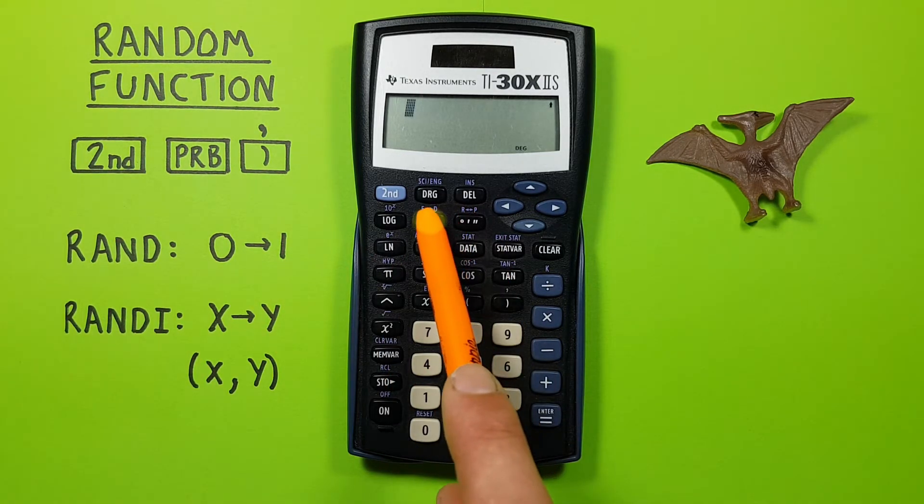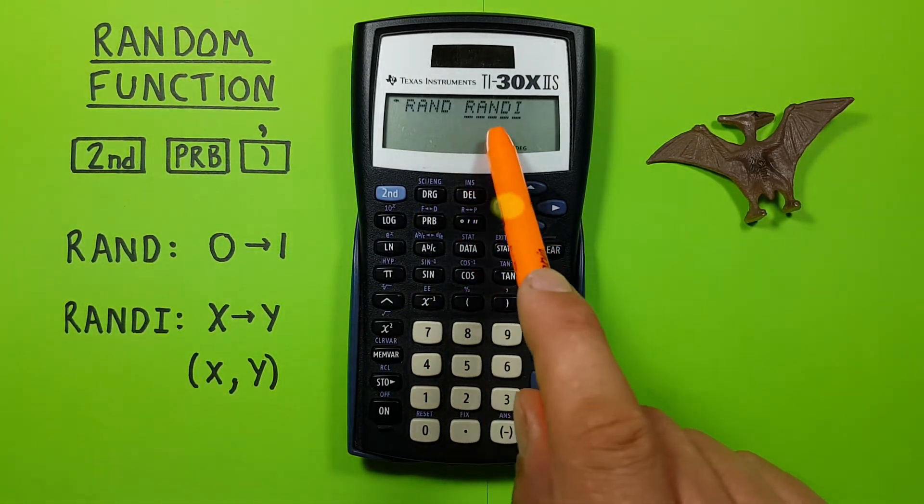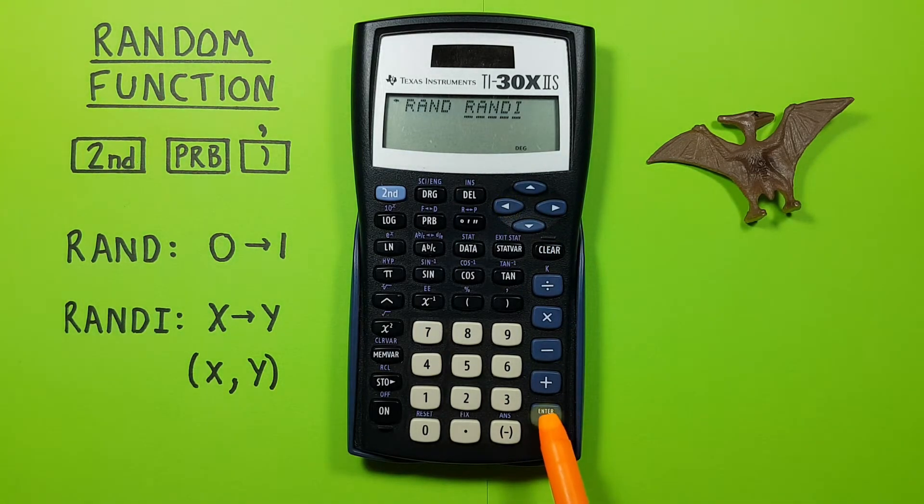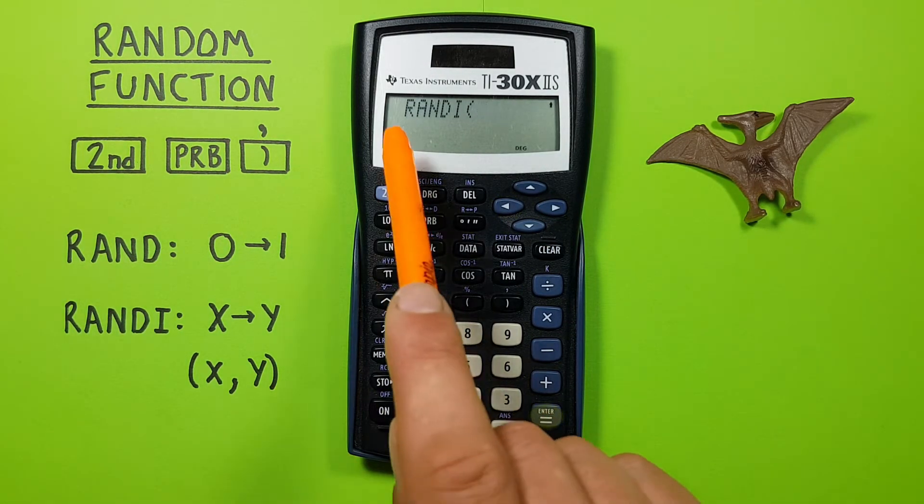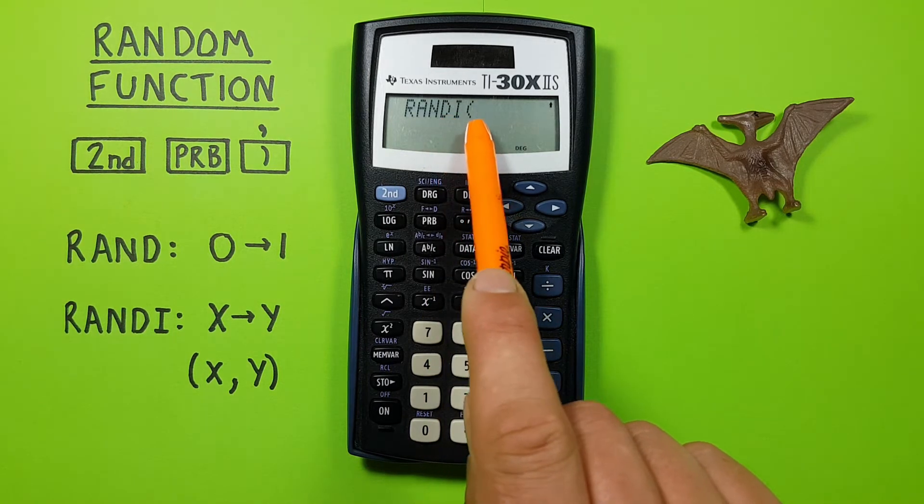Again, we get to that by pressing the probability key, scrolling over, selecting RANDI, pressing enter. And we see this on our screen, RANDI, and an open bracket.